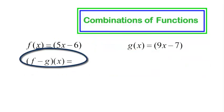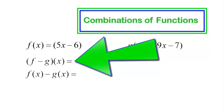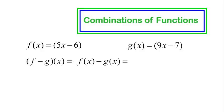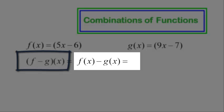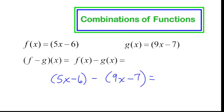(f-g)(x) means f(x) minus g(x). Someone just shortened it to (f-g)(x). Maybe they were putting it in a text message. So (f-g)(x) is just a shorthand way of saying f(x) minus g(x). This may make it clearer to you. Let's work the problem. f(x) is 5x minus 6 minus g(x) is 9x minus 7.